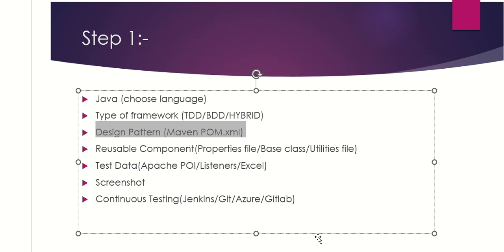Next are the reusable components — the properties file, base class, and utility file. The properties file stores common information that can be accessed throughout the framework, such as which browser to run, the application URL, and user credentials. Keeping these details in the config file makes it easy to maintain and use. The base class, base.java, contains all the common functions used by all pages.